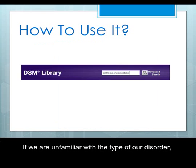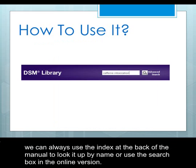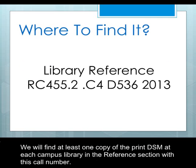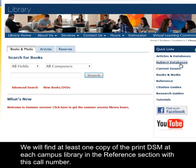If we are unfamiliar with the type of our disorder, we can always use the index at the back of the manual to look it up by name, or use the search box in the online version. We will find at least one copy of the print DSM at each campus library in the reference section with this call number.